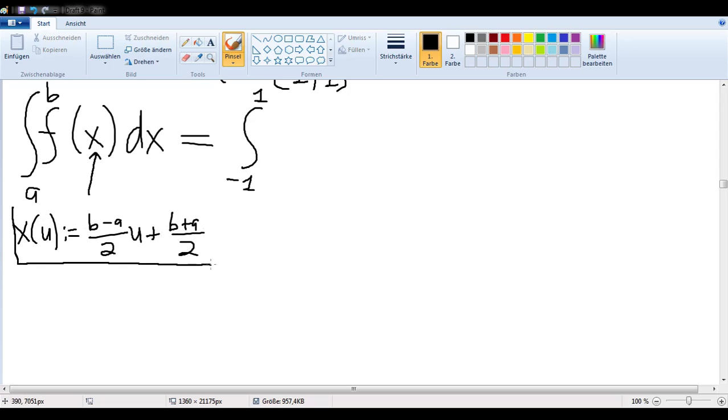Now, you might ask yourself, where does that come from? I think you'll see where it comes from if I do a couple of values. So x of negative 1 would be... if u were negative 1 here, then that would just swap this a and b around from this negative sign. So it would have (a minus b) over 2 plus (b plus a) over 2. We see that we have a negative b and a b, so we have a over 2 plus a over 2, which of course adds up to a.